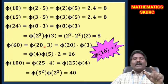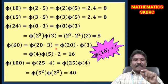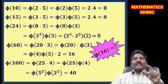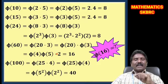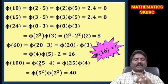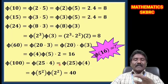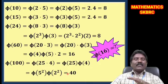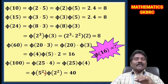φ(60) = φ(20 × 3). Since 20 and 3 are relatively prime, φ(60) = φ(20)·φ(3) = φ(4)·φ(5)·φ(3). φ(100) = φ(25 × 4). Since 4 and 25 are co-primes, φ(100) = φ(25)·φ(4) = φ(5²)·φ(2²). That equals (5² − 5)·(2² − 2) = 20 × 2 = 40. A cyclic group of order 100 has 40 generators.